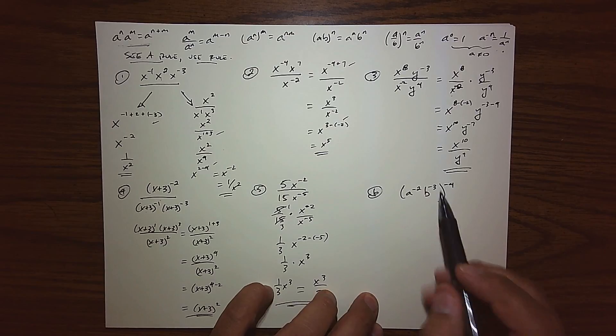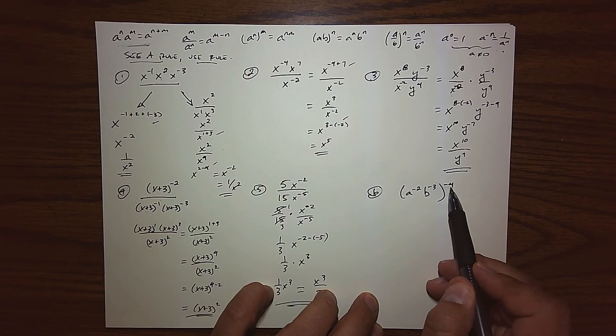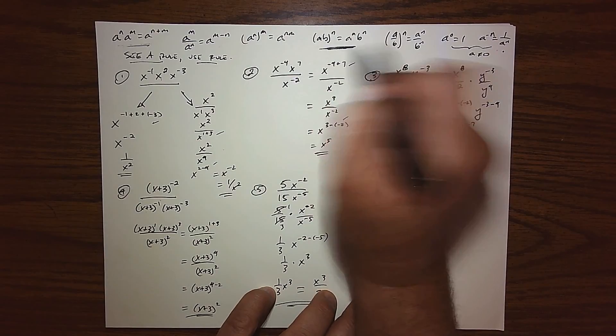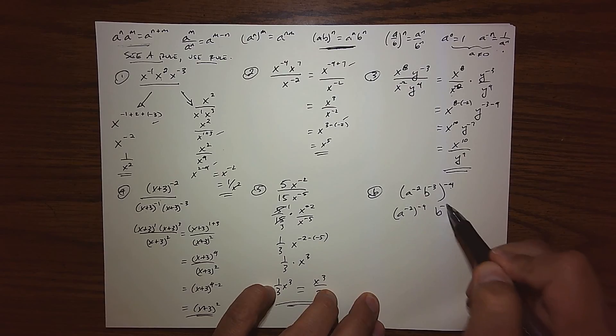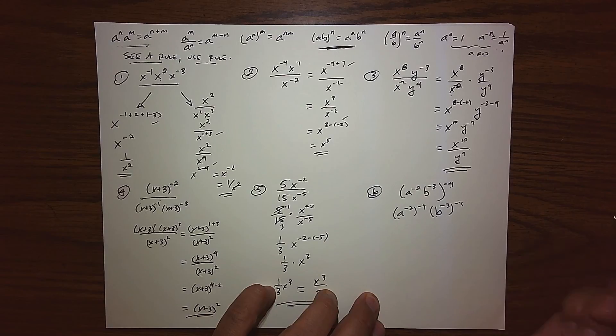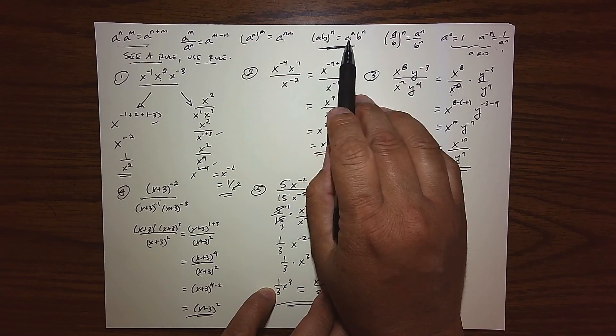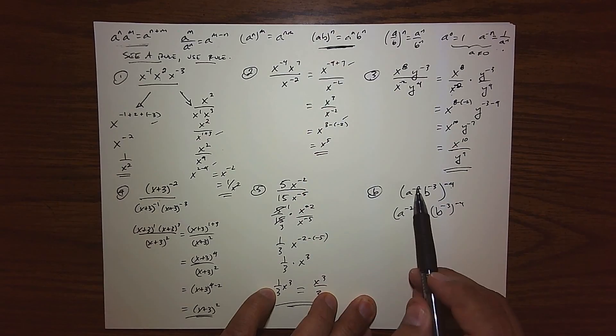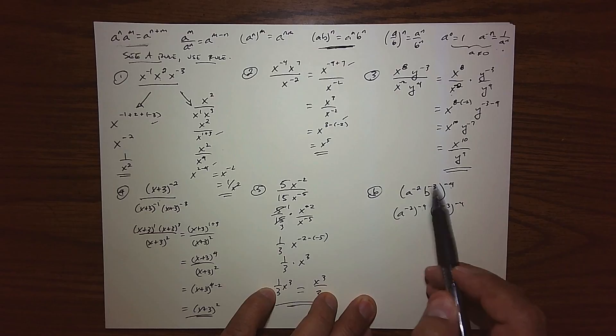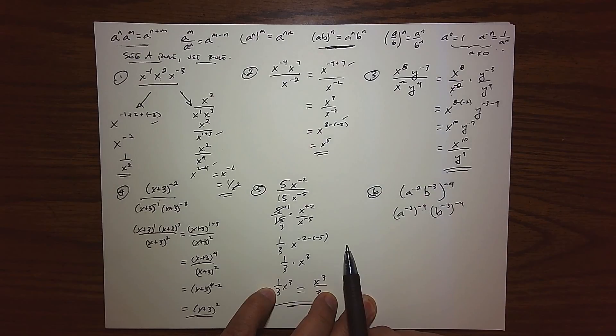Last but not least, we're looking at this. We have a product, and it's being raised to a power. So I definitely have my power of a product. So applying that, I get a to the negative 2 to the negative 4, and b to the negative 3 to the negative 4. So every factor gets raised to that power. So the factor of a to the negative 2 gets raised to the negative 4, and the factor b to the negative 3 gets raised to the negative 4.